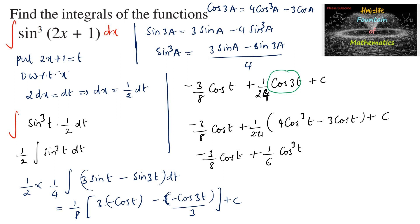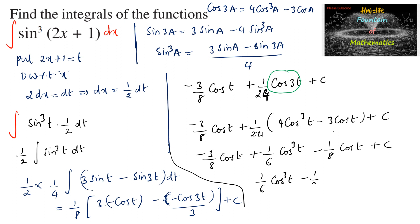Combining the cosine terms: -3/8 - 1/8 gives -4/8 = -1/2. So the simplified result is 1/6 cos³t - 1/2 cos t + c. Substituting back t = 2x+1, this is our final answer.